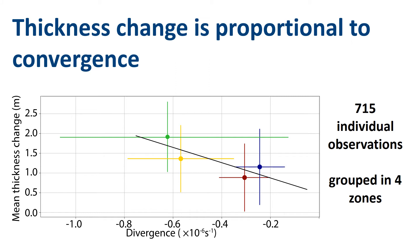This graph shows how convergence — that is, negative divergence — scales with mean thickness change. Individual observations from the trajectories were averaged into four groups, which is why you see only four points. What is clearly visible is a proportionality between convergence and thickness change, and this is reflected by the satellite observations. This means deformation derived from the satellite imagery is able to explain the observed thickness change, and by implication we can use this relationship to calculate dynamic thickness change from SAR images.